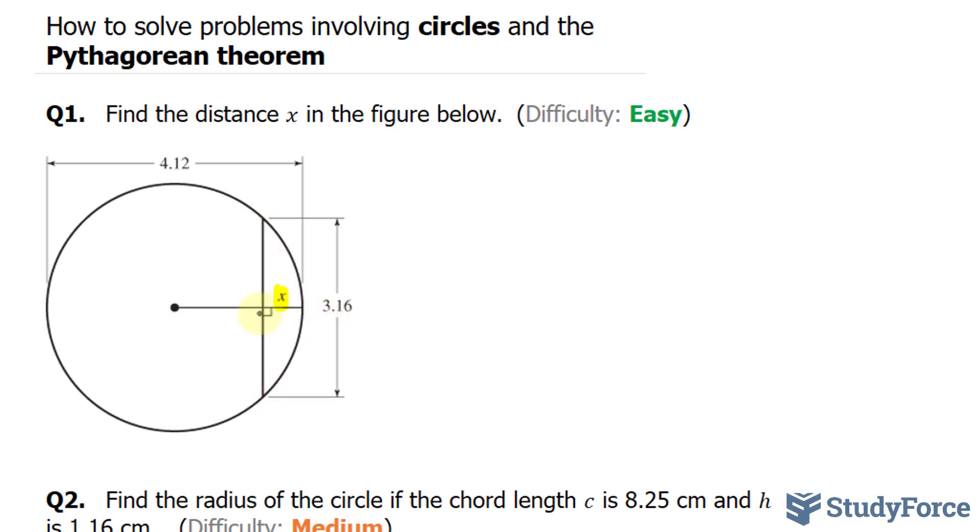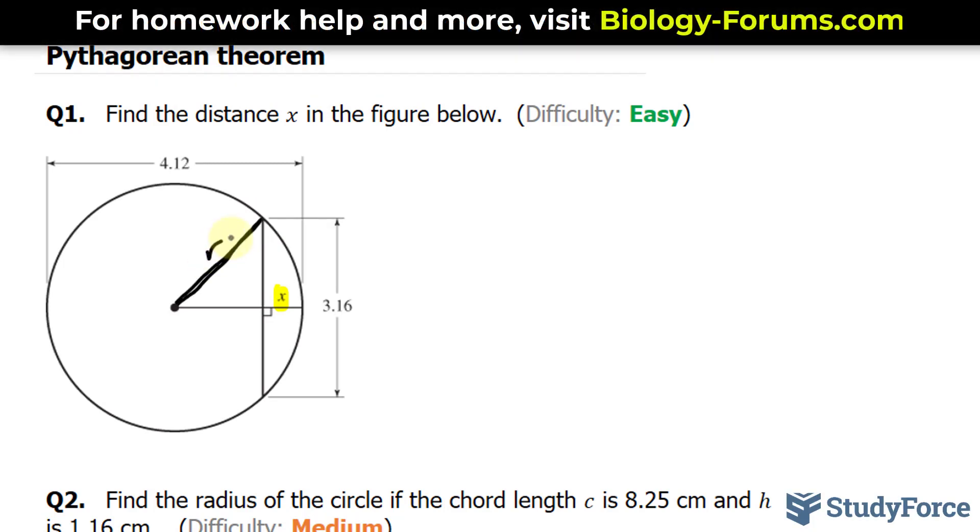To find out what this is, the first thing that I have to do is extend a line from the center to this part of the circle, and that will serve as my radius. And this line will be called r.